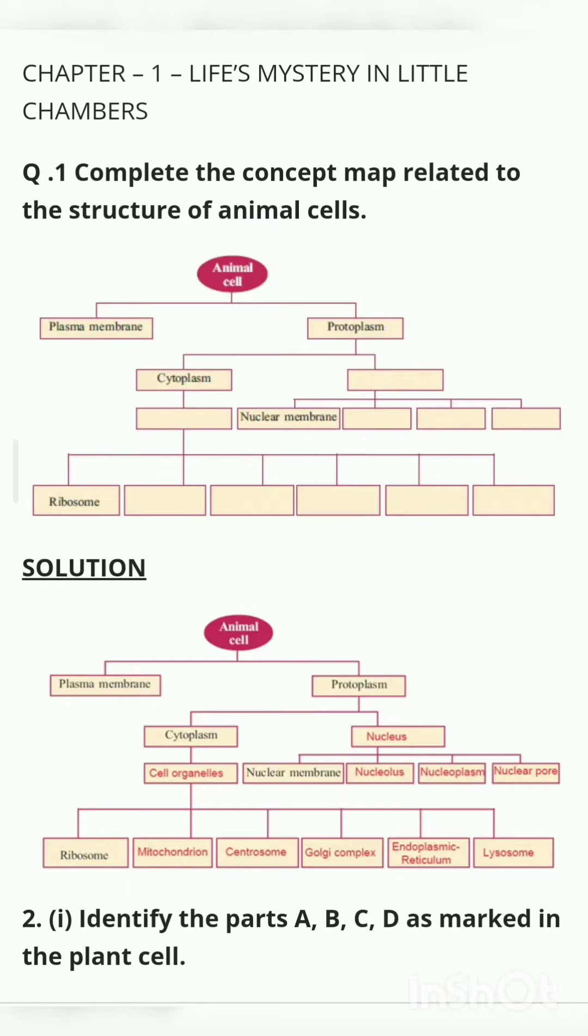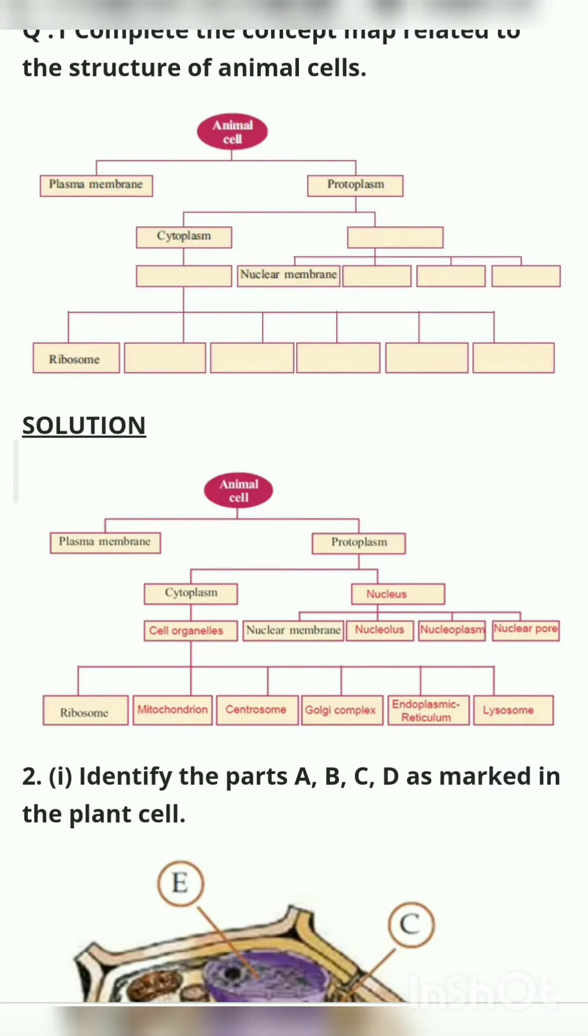These questions are shown in your textbook, page number 19, Let Us Assess. So let's start. Question number one: complete the concept map related to the structure of animal cells. The question is this and the solution is: